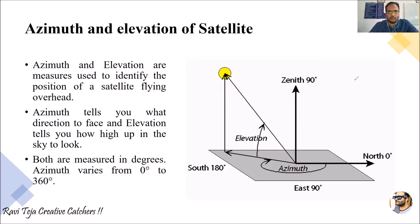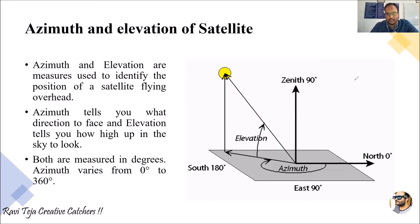Welcome to the course of microwave communication, television, and satellite communication. In today's topic, we are going to discuss azimuth and elevation angles of a satellite — what they are and how they are related to a satellite as well as the ground station or earth station.